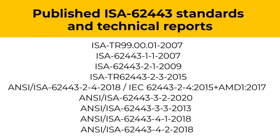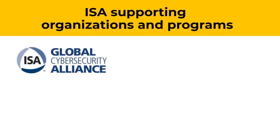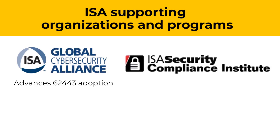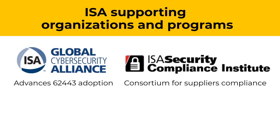The documents have corresponding naming conventions from both organizations, but are identical and released concurrently. The ISA Global Cybersecurity Alliance promotes the importance of automation cybersecurity and works to advance the worldwide adoption of the 62443 series of standards. The ISA Security Compliance Institute is a certification consortium offering three schemes for industrial automation and control technology suppliers to demonstrate protection of products and systems from cybersecurity threats.